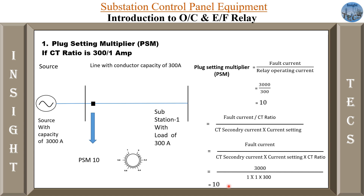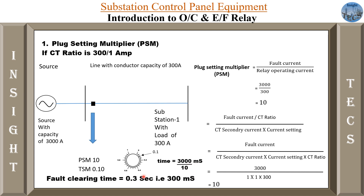That is 3000 milliseconds. If this is the time setting multiplier, by changing this setting we can change the TMS multiplier. So if it is 1, then time taken by the relay operation will be 3 seconds. But if it is reduced to say 0.1, meaning the TMS we are choosing is 0.1, then the total time taken will be 3000 milliseconds divided by 10, so fault clearing time will now be 300 milliseconds, that is 0.3 seconds. This is how the basic calculation of PSM and TSM is done.